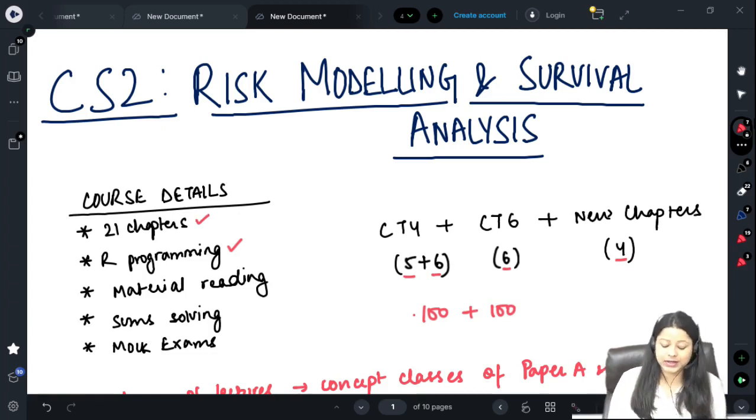We have to cover these 21 chapters in paper A and cover R programming. R programming is new to most students. You have already covered this in CS1. CS1 is the only requirement for CS2.